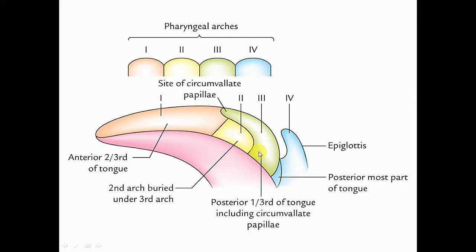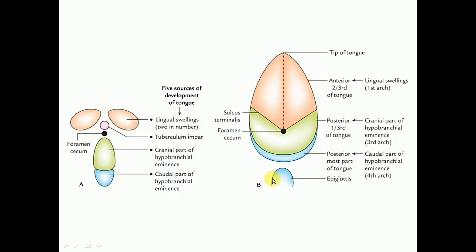The posterior-most part of the tongue is derived from the caudal part of the hypobranchial eminence, so it is derived from the fourth arch.